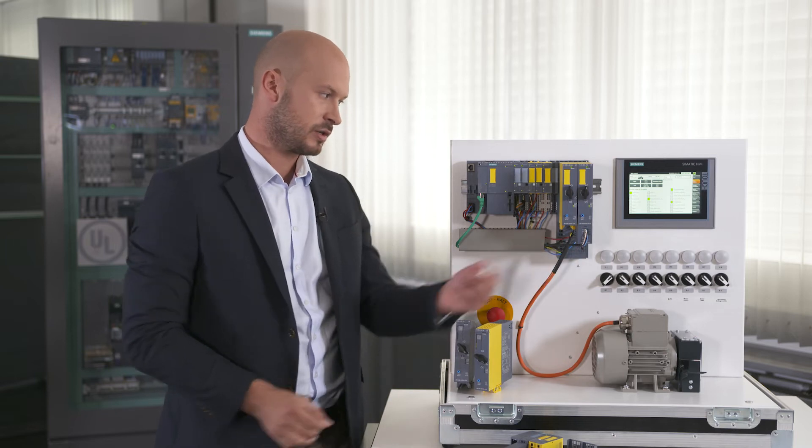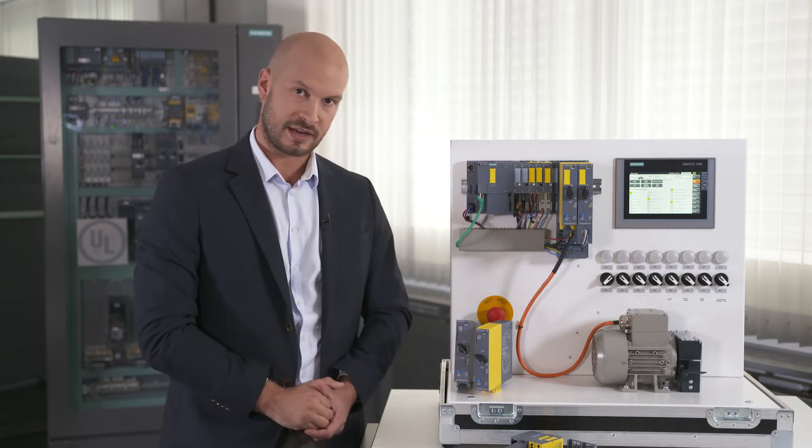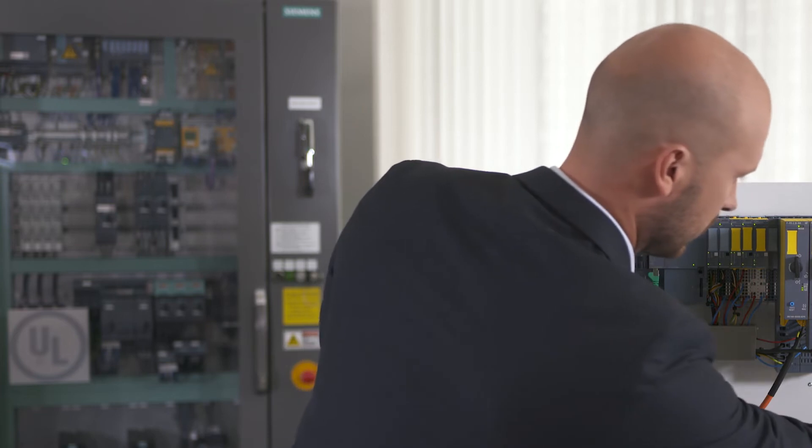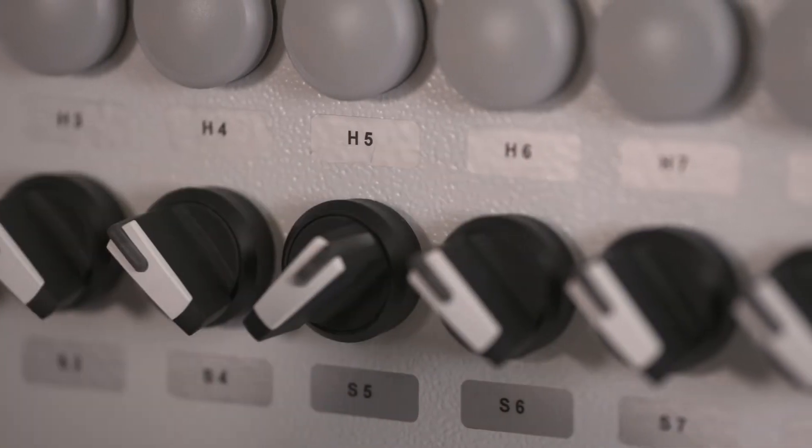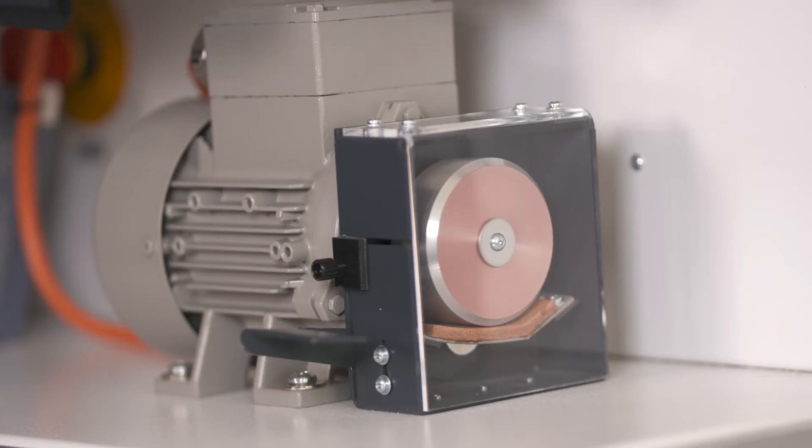For instance, during commissioning you can test clockwise and counterclockwise rotation via the inputs. You can do that here for example. I'll activate local control here. Turn the motor clockwise and then counterclockwise.